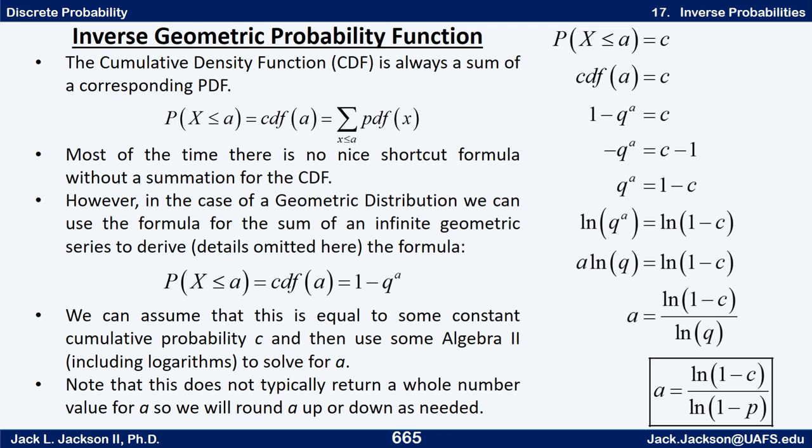Can't be zero, can't be negative, can't be something in between like one and a half. Okay, so what we will typically do is we'll get this a that we have and then we'll either round it down or round it up depending on our needs.